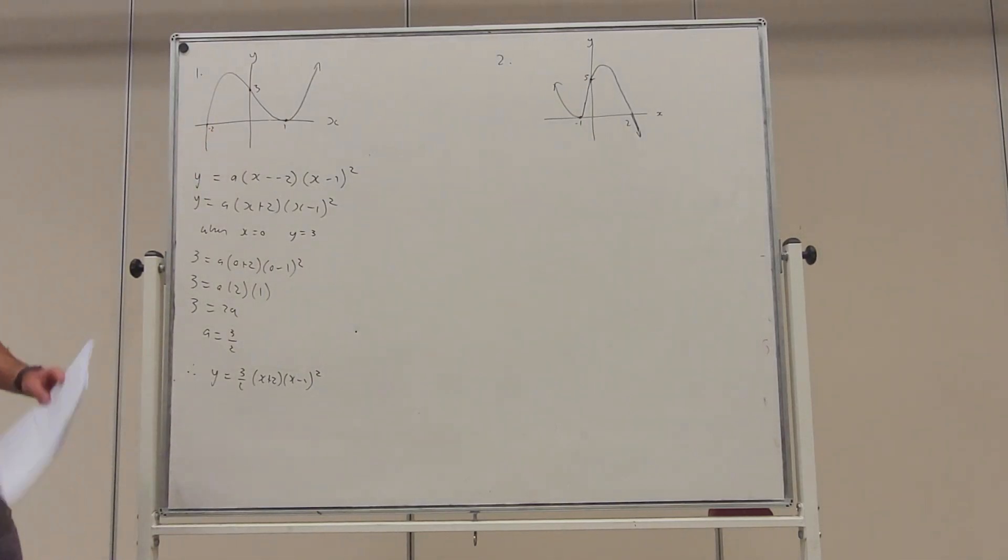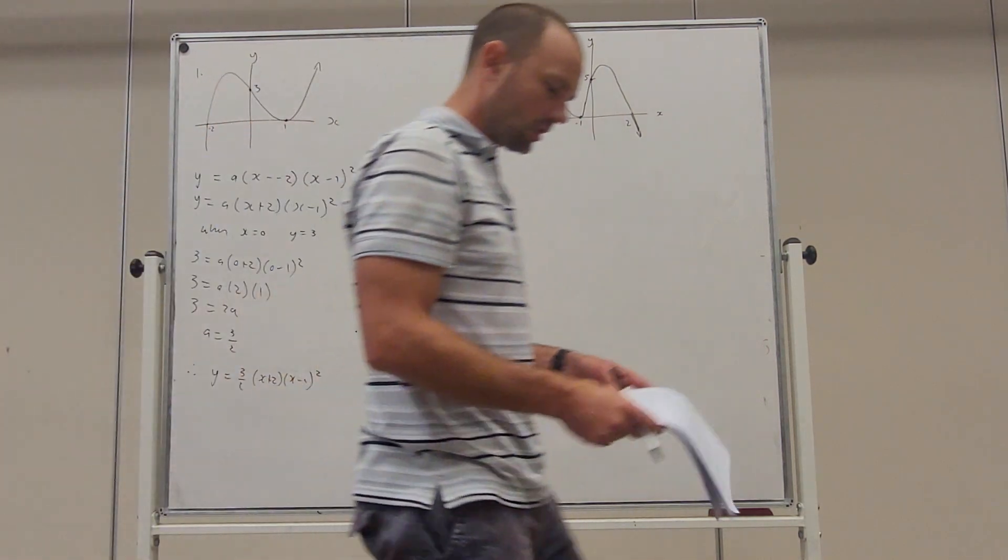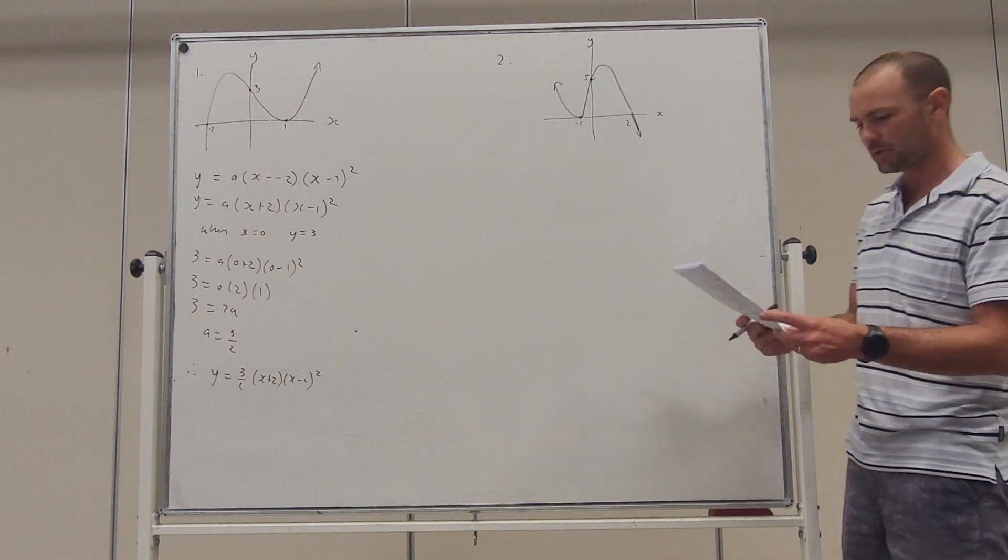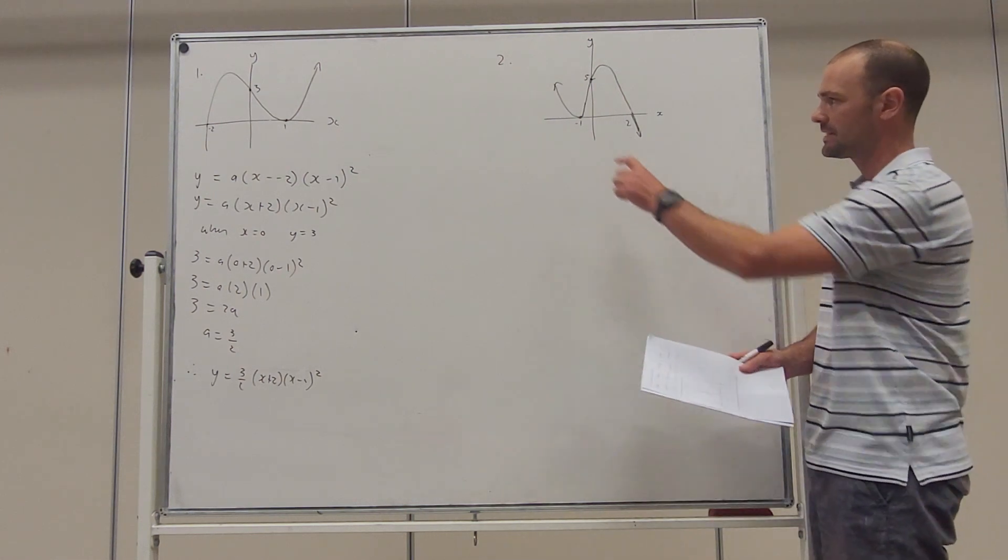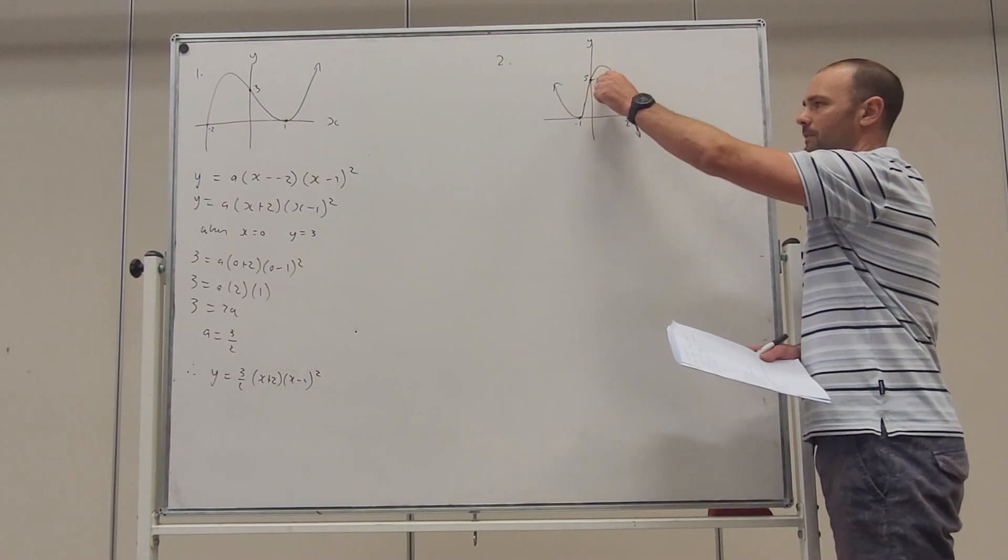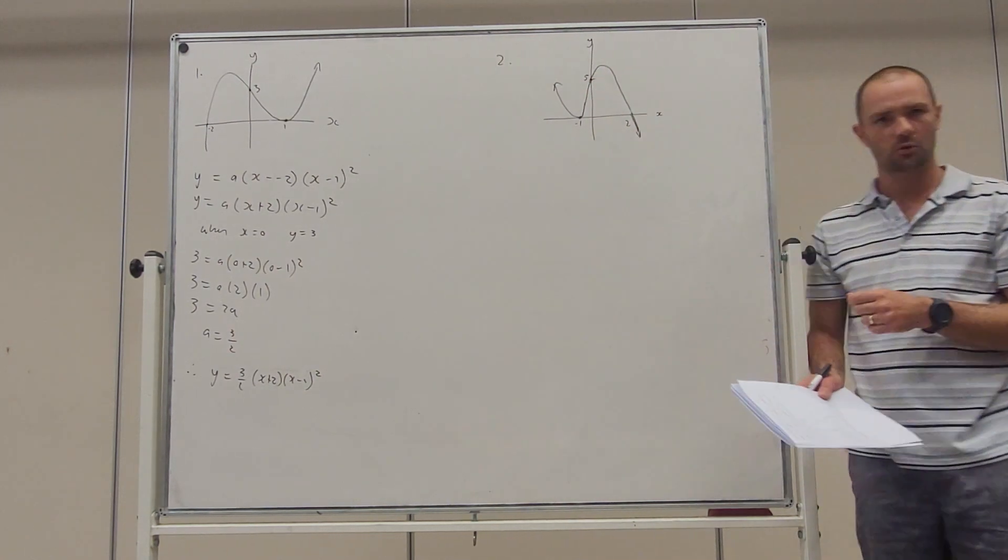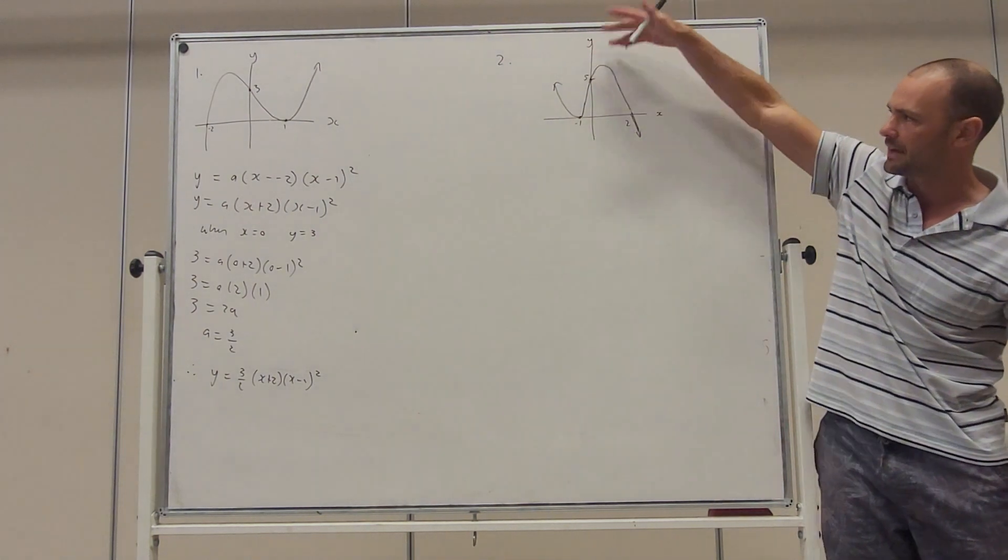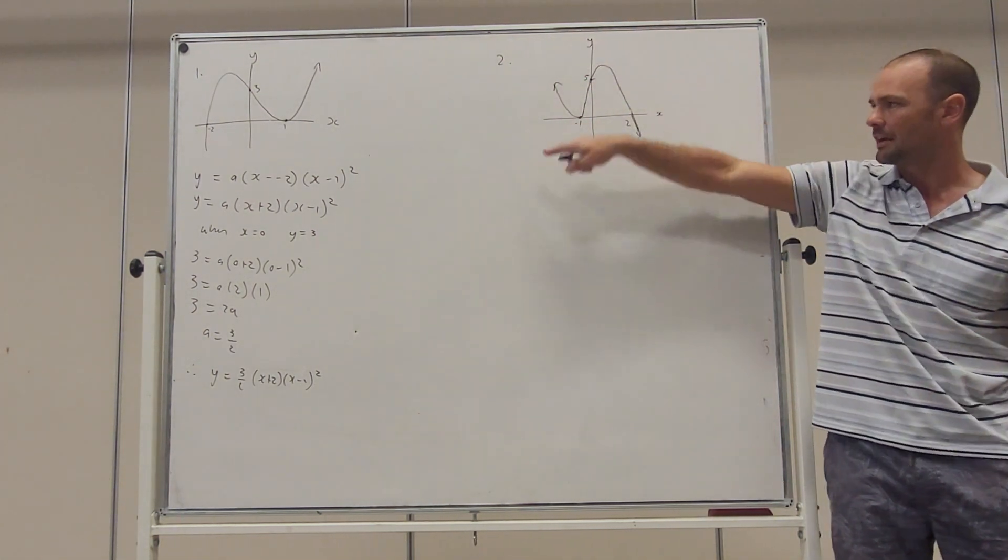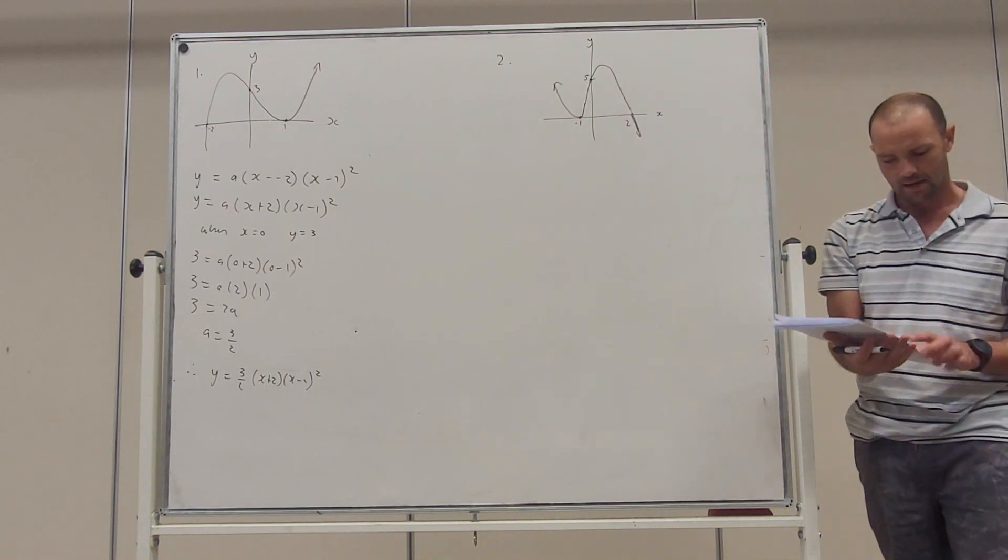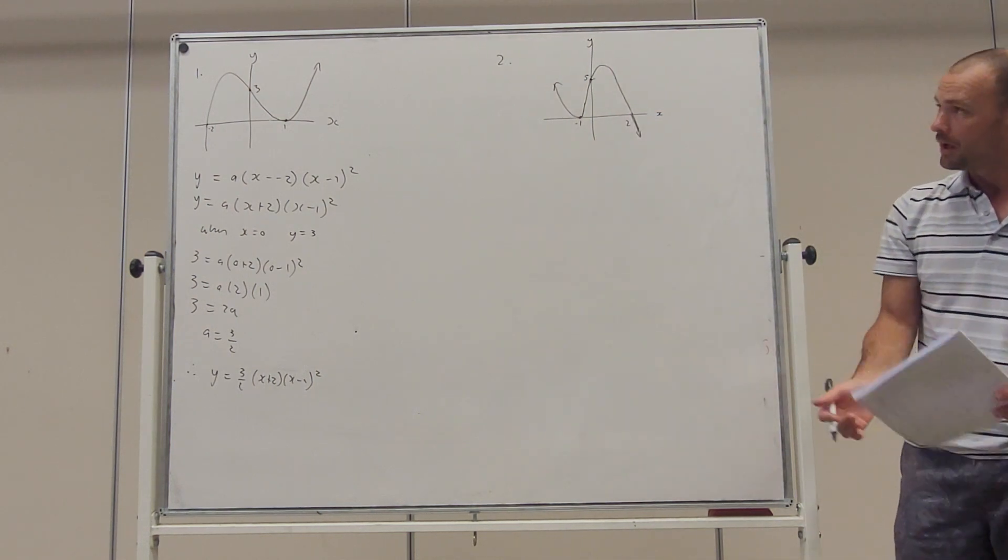Let's talk quickly about question two then. Question two says sketch the polynomial that touches the x-axis at minus one, y intercept with five, and cuts at two. If it has those properties, it has to be above the x-axis here. It can't end up being a minimum point and then somehow have a y intercept with five - it has to have those properties.